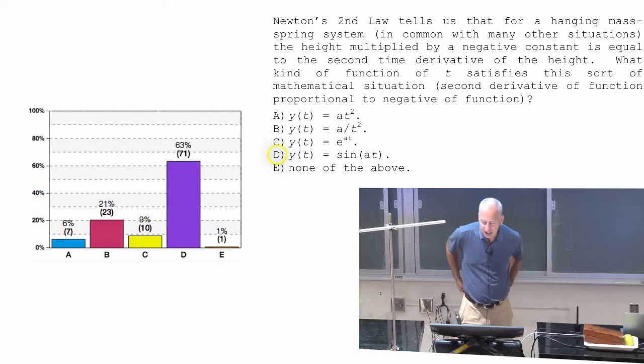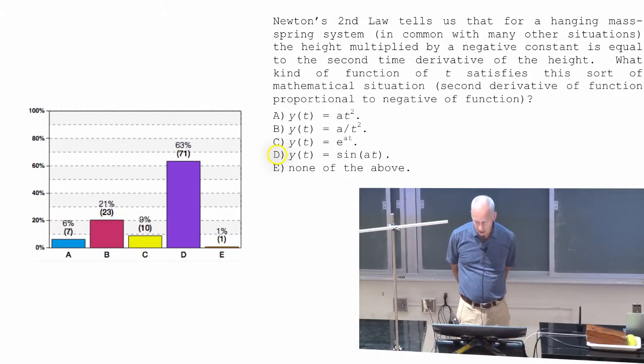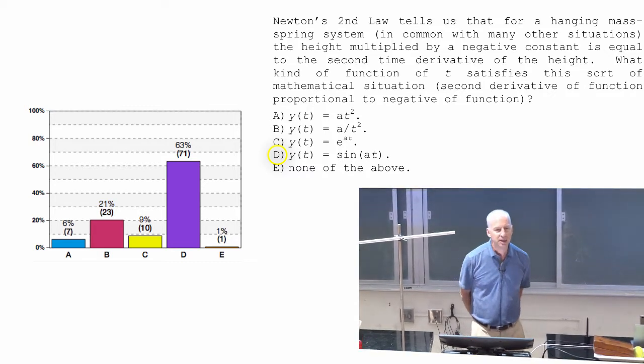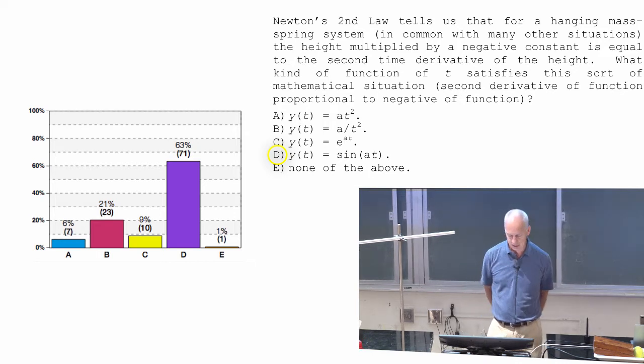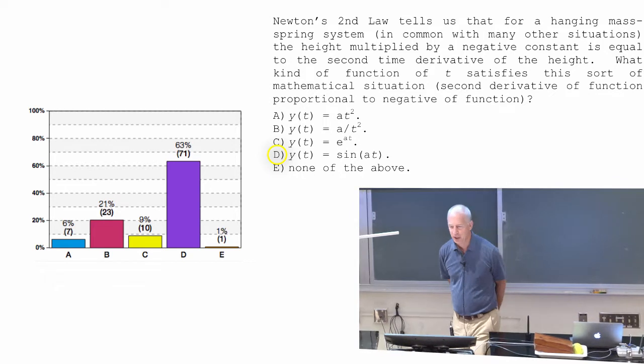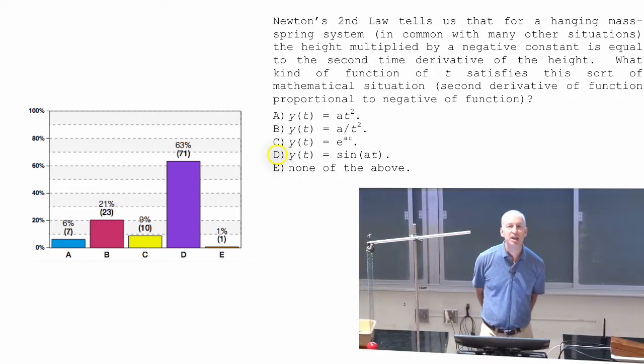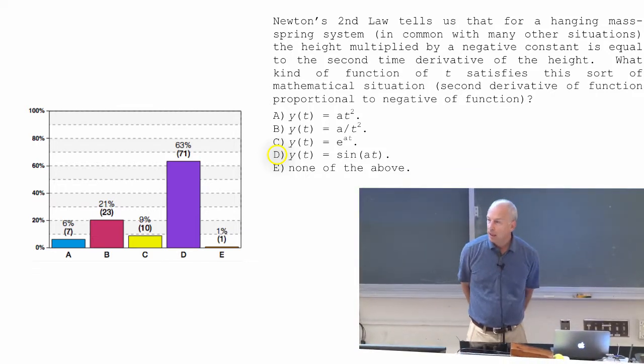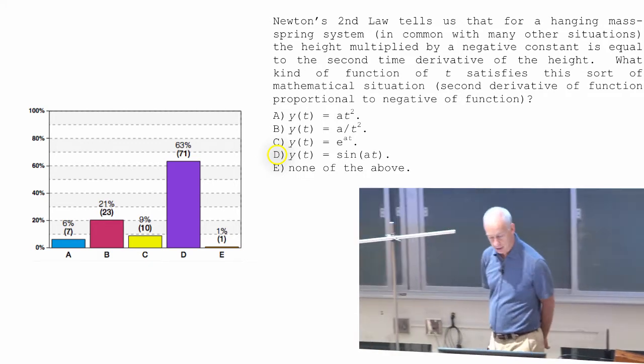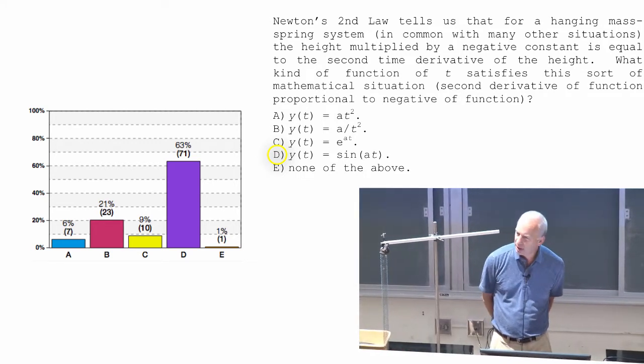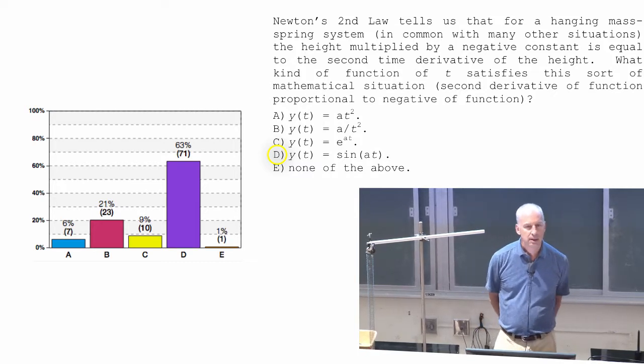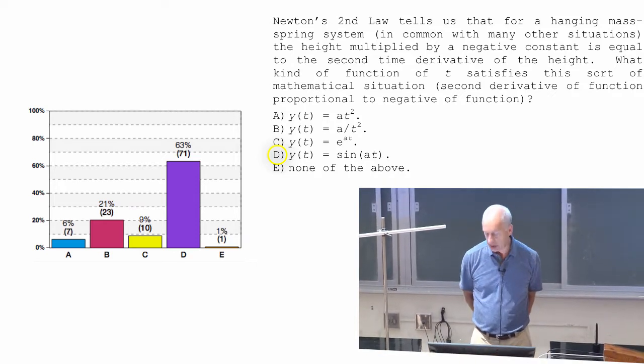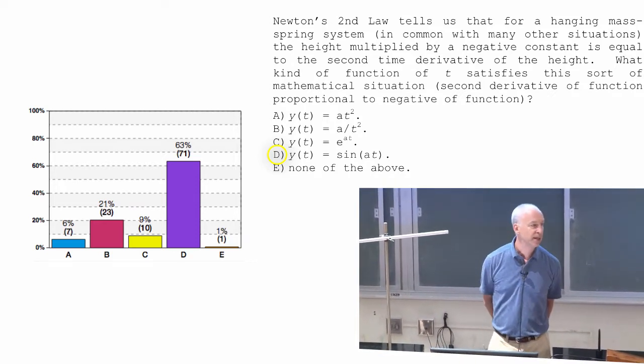All right, so the main answer is D. Let's think about that one. The derivative of sine of AT with respect to T is the derivative of the inside times the derivative of the sine. So what's the derivative of the sine? That would be cosine, A times cosine of AT. If you take a derivative of A times cosine of AT, then you get another A, so A squared. And the derivative of the cosine is negative sine, so negative A squared times sine of AT, negative of some constant times the sine function.